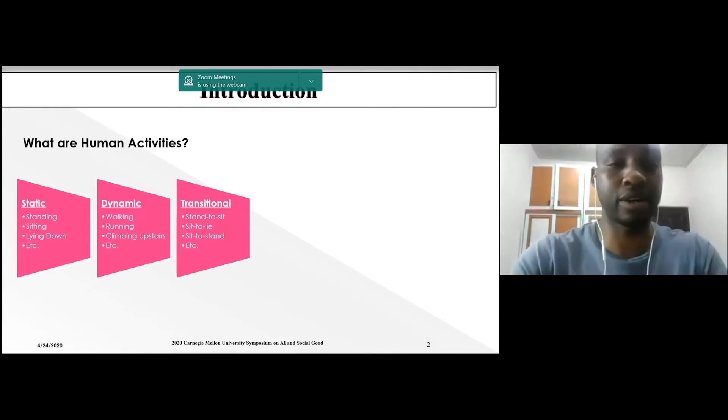Basically, what are human activities? Everybody knows that human beings perform functional activities - integration or independent activities. It can either be static, dynamic, or transitional activity. Different activities are performed by different individuals with different patterns as a result of age category or health status, which makes it difficult to have a comprehensive dataset for all human activity patterns.